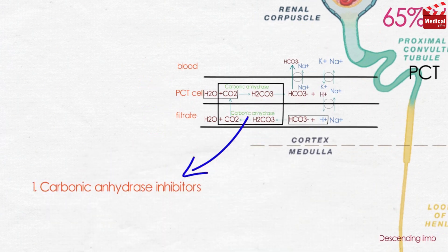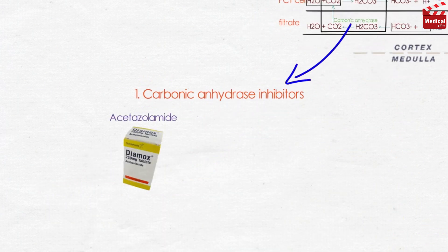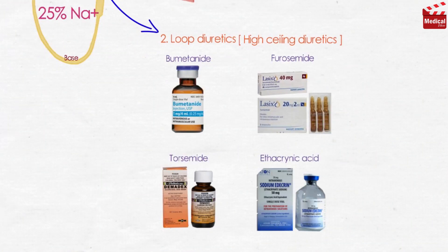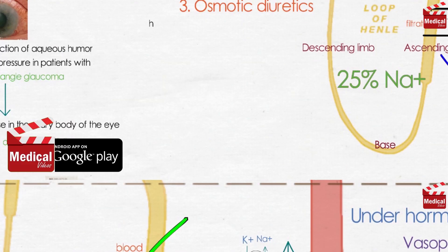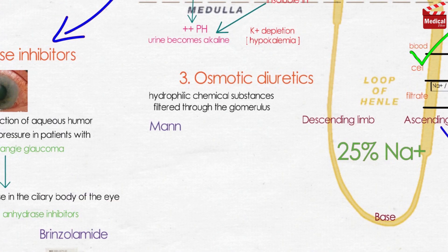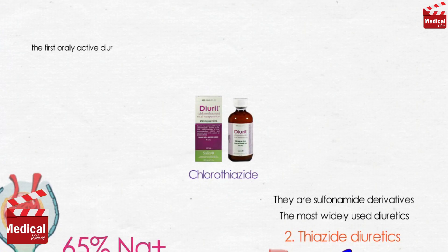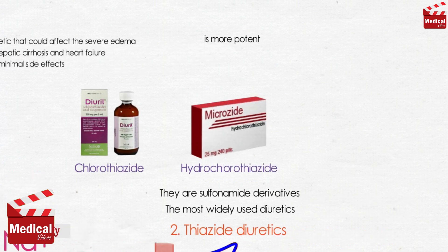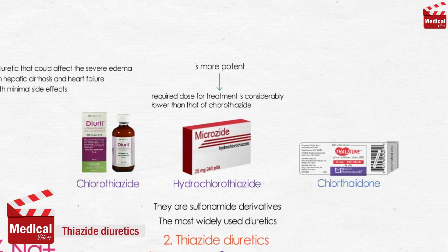In the previous lecture we discussed three categories of diuretics: the carbonic anhydrase inhibitors, loop diuretics, and osmotic diuretics. Today we'll discuss the thiazide diuretics.